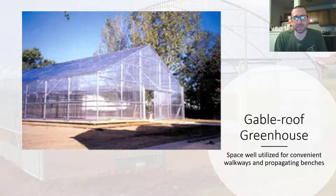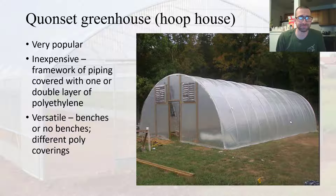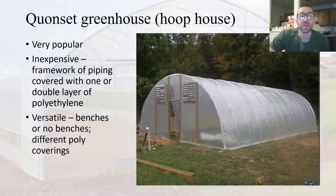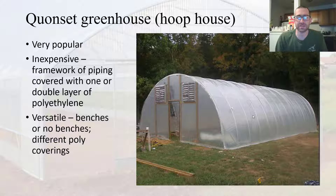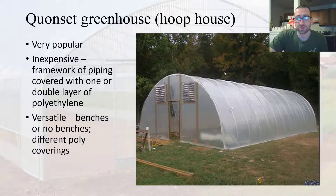We can also have different shapes of our greenhouses. Your common traditional greenhouse is a gabled roof greenhouse. However, what is becoming much more popular are Quonset-style greenhouses or hoop houses. These are becoming more popular partially because they are inexpensive — you just need a simple framework and then cover it with a double layer of polyethylene plastic. Just like with gabled roof greenhouses, these Quonset styles are also versatile; you can have benches, no benches, and different types of heating or cooling systems.